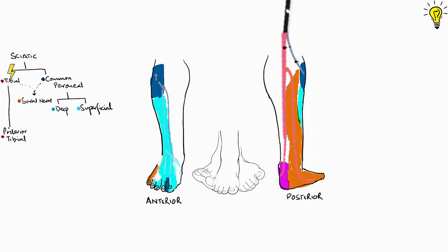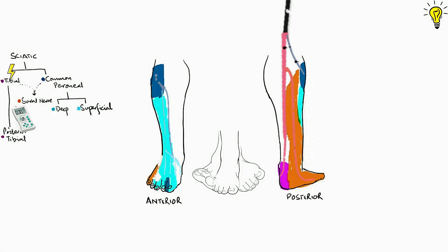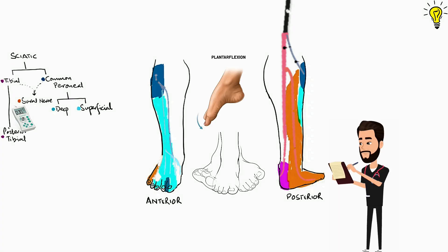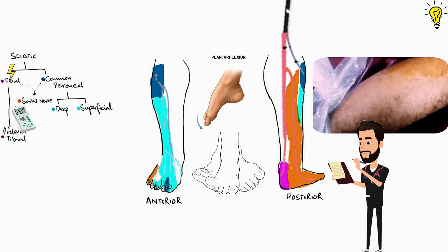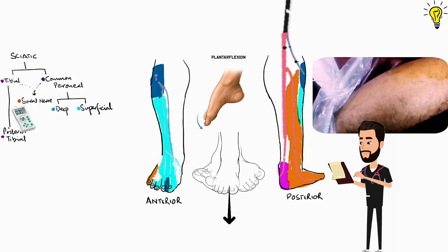Stimulation of the tibial nerve causes two main movements: number one, inversion of the foot, and number two, by contracting the gastrocnemius, soleus, and plantar muscles, it causes plantar flexion.